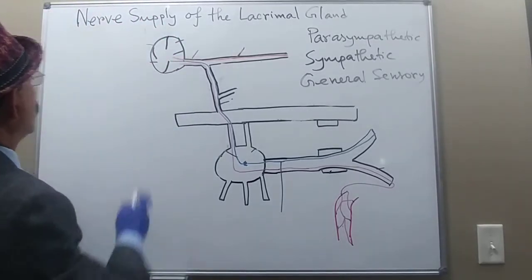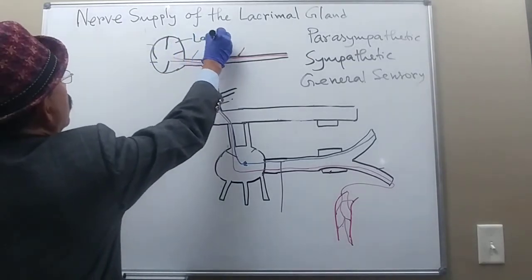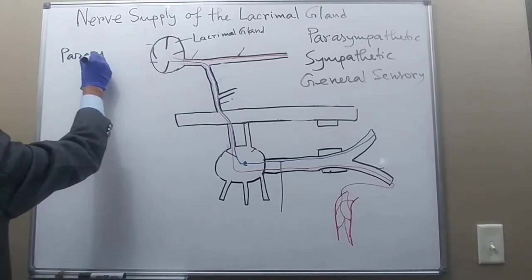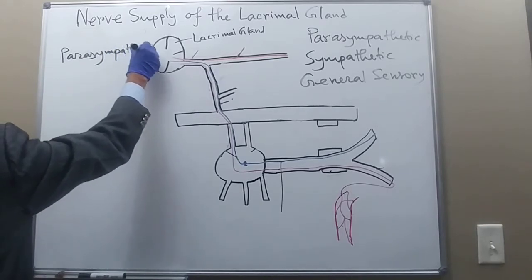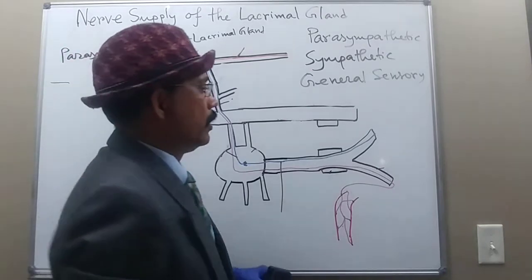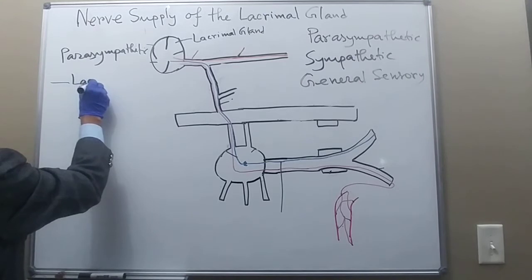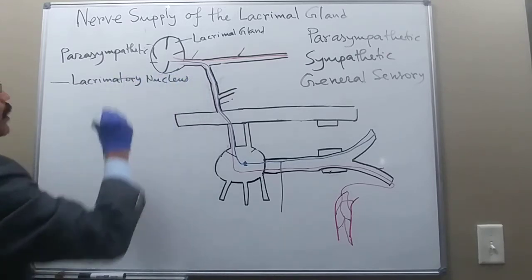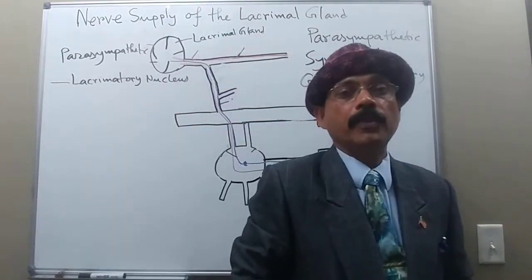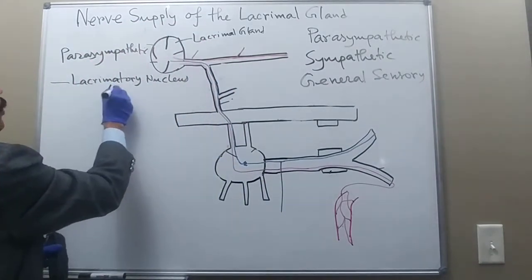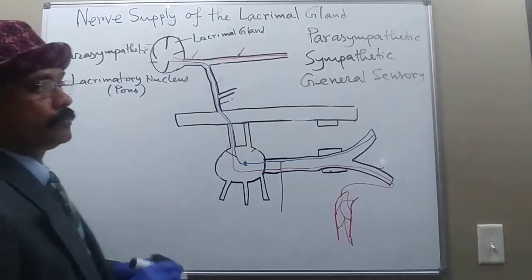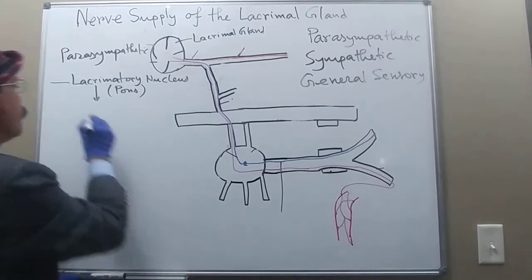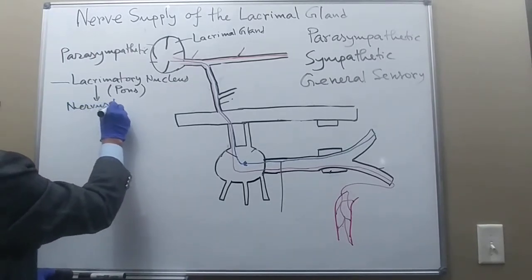First of all, let us go to the parasympathetic. This is the lacrimal gland. For the parasympathetic, the preganglionic fiber is coming from the lacrimatory nucleus. The lacrimatory nucleus is the upper part of the superior salivatory nucleus. It is located in the pons, which is a part of the brainstem. From there, from the lacrimatory nucleus, we are getting the nervus intermedius — the fiber passes through the nervus intermedius.